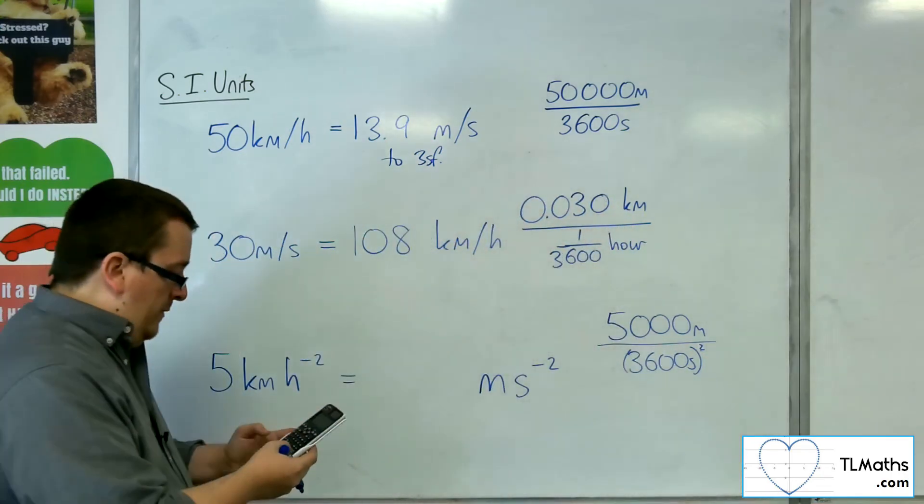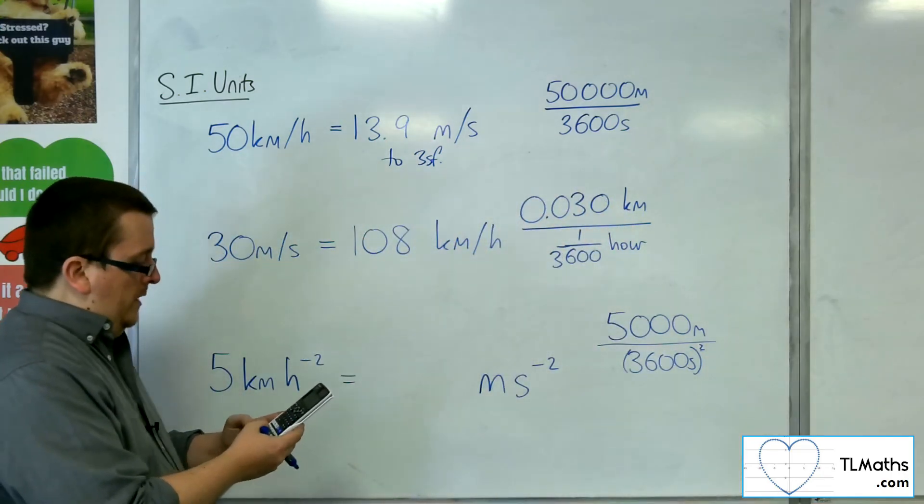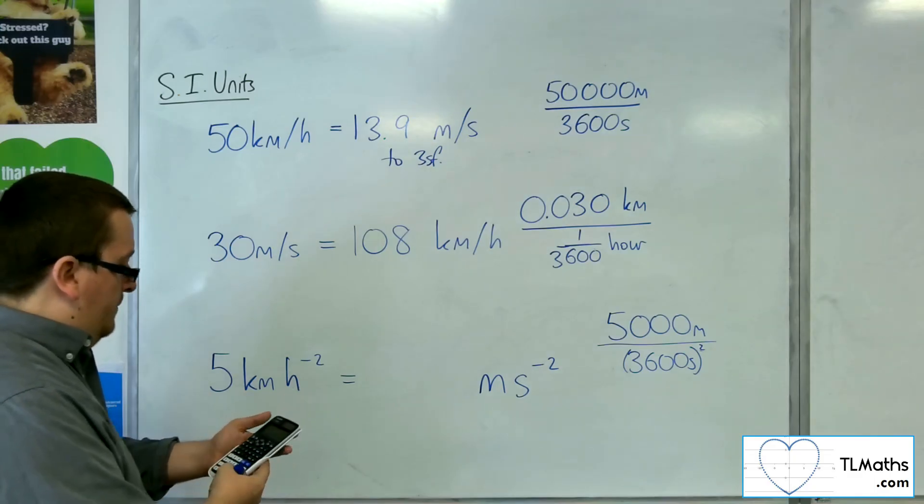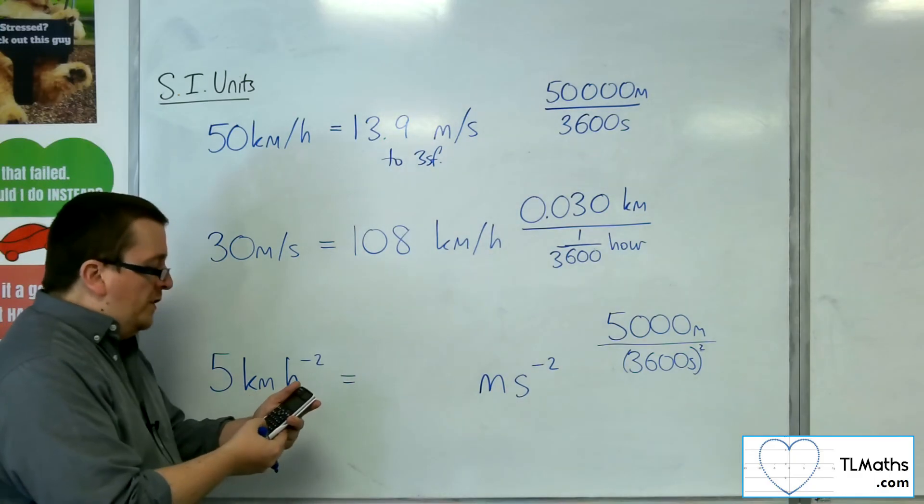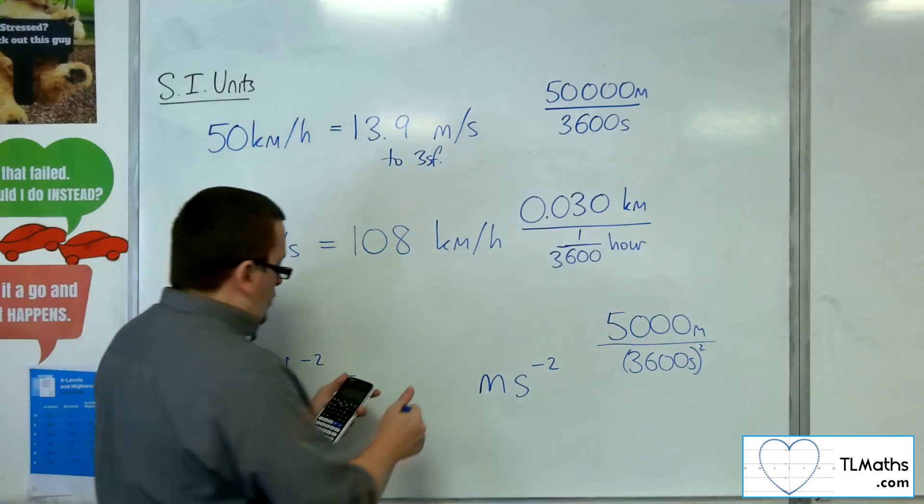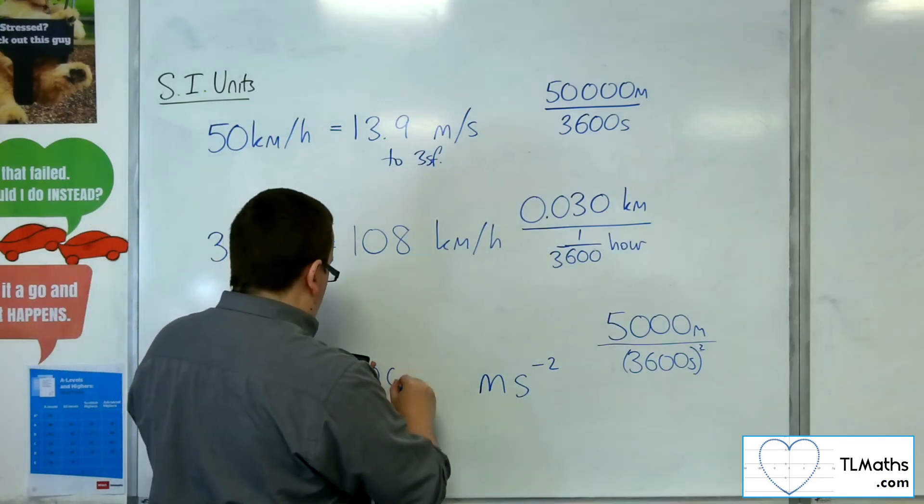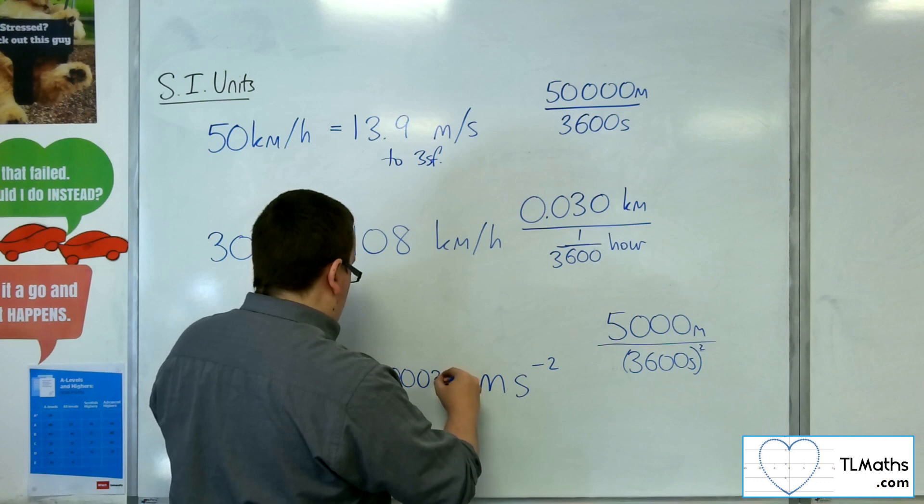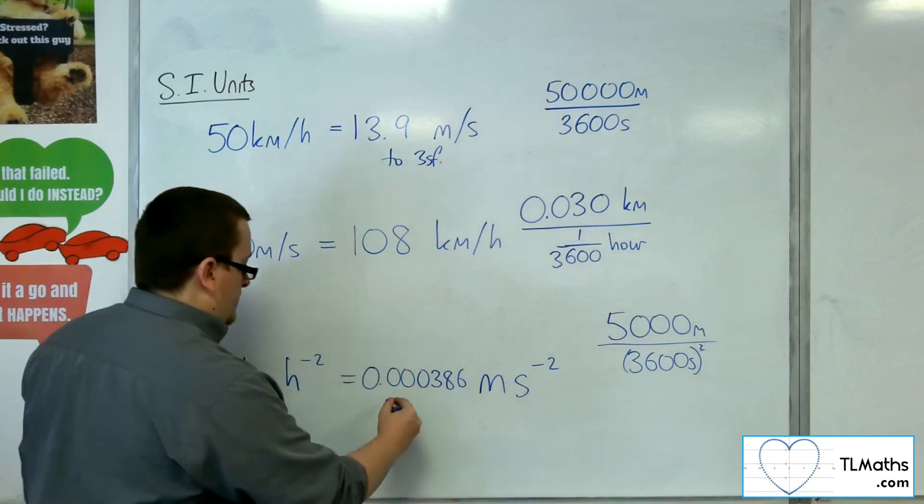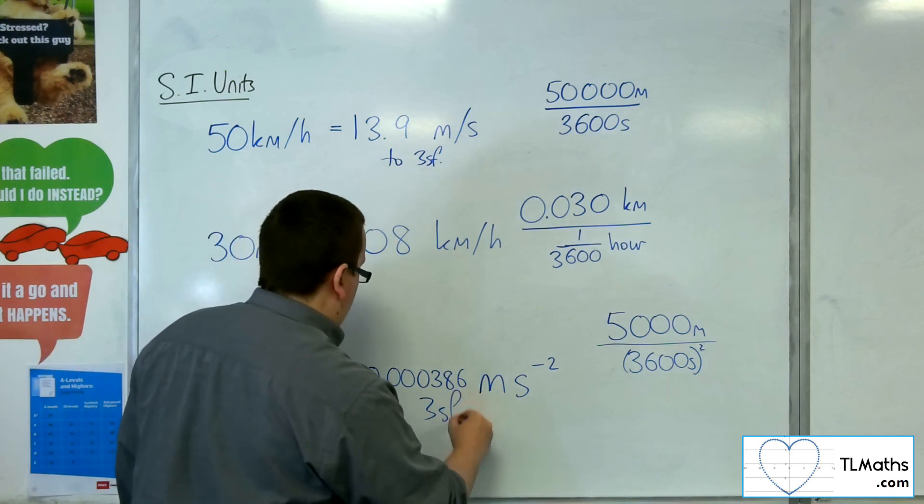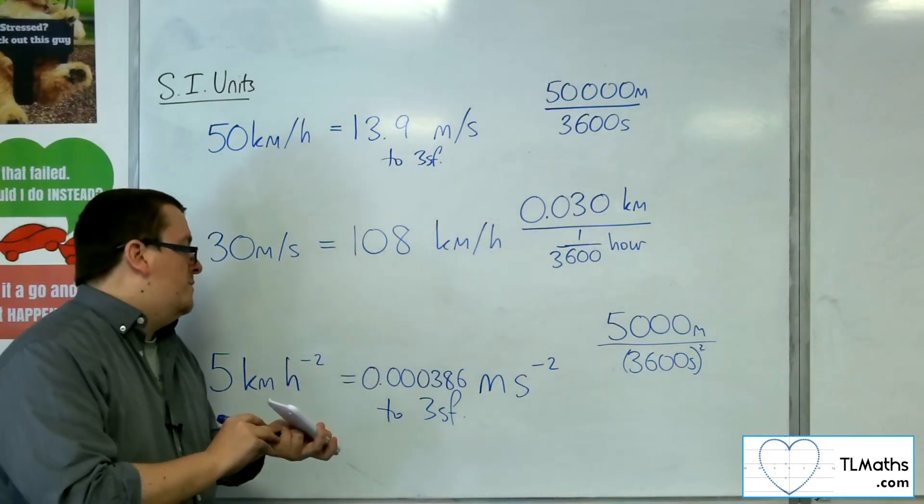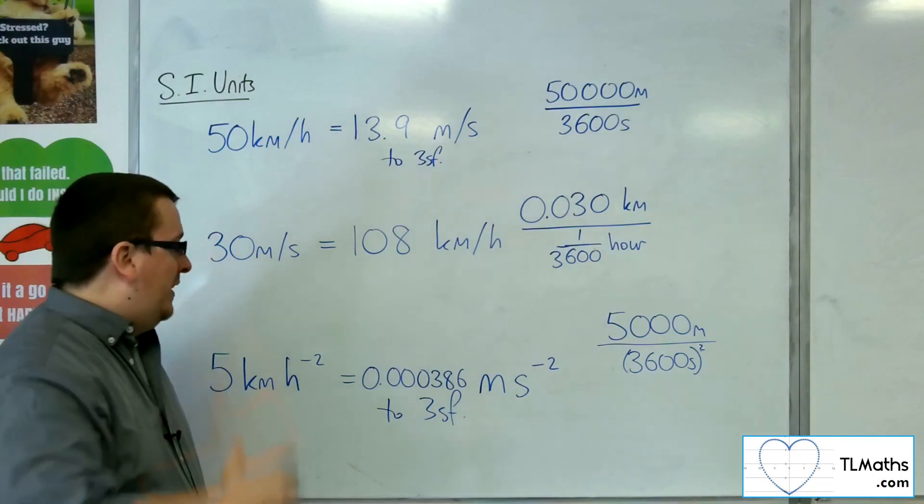So in actual fact, we've got 5,000 divided by 3,600 squared. And that gets me 1 over 2,592, which is 0.000123, so 3, 8, 6 to three significant figures. So 0.000386 metres per second per second.